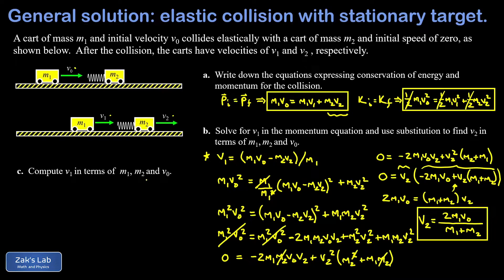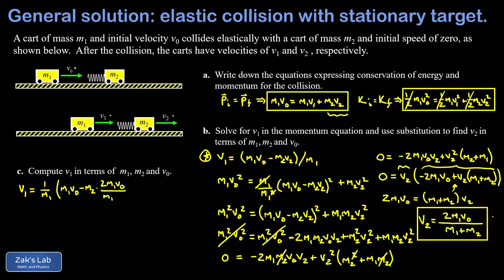For part c, compute v1 in terms of m1, m2, and v_naught. Returning to the substitution expression: v1 equals (1/m1) times (m1*v_naught minus m2*v2). Substituting v2 = 2*m1*v_naught/(m1 plus m2): distributing 1/m1, each numerator term has a factor of m1 that cancels, leaving v_naught minus m2 times 2*v_naught/(m1 plus m2). Finding a common denominator gives (v_naught*(m1 plus m2) minus 2*m2*v_naught) all over (m1 plus m2).